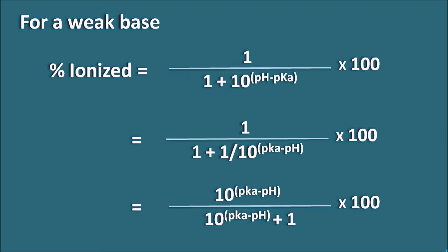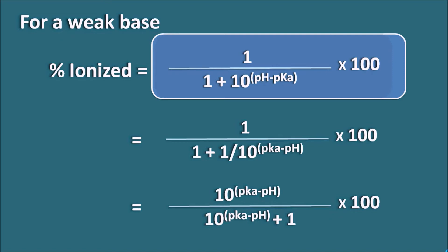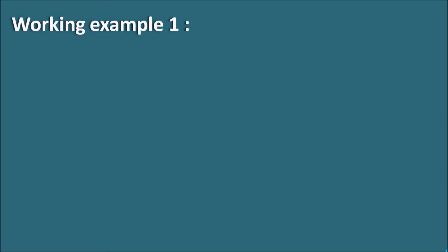In the first form the exponent is (pH − pKa), and in the last form it is (pKa − pH). For convenience, the first equation is preferred: 1 / (1 + 10^(pH − pKa)) × 100. The only difference between the weak acid and weak base formulas is the numerator — for a weak acid it is 10^(pH − pKa), while for a weak base it is simply 1; the denominator is the same. Let us now work through some calculation examples.